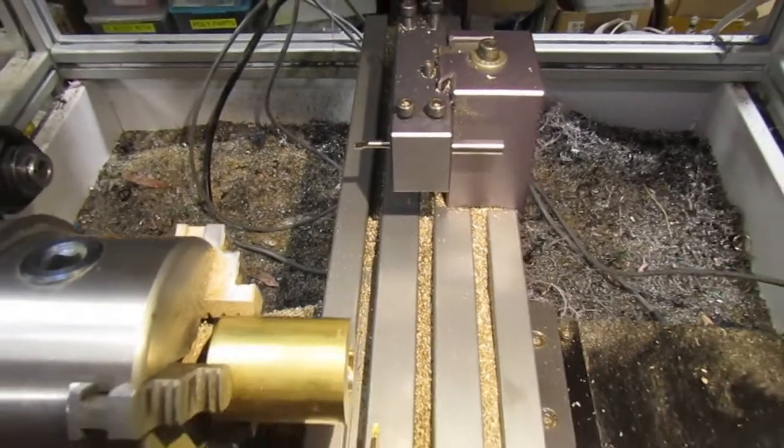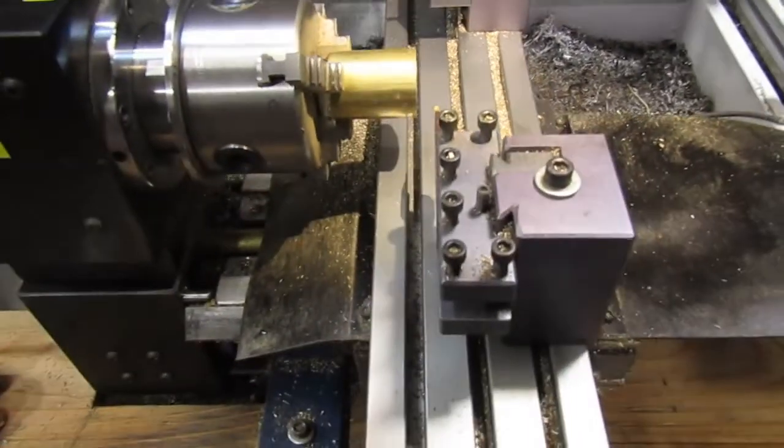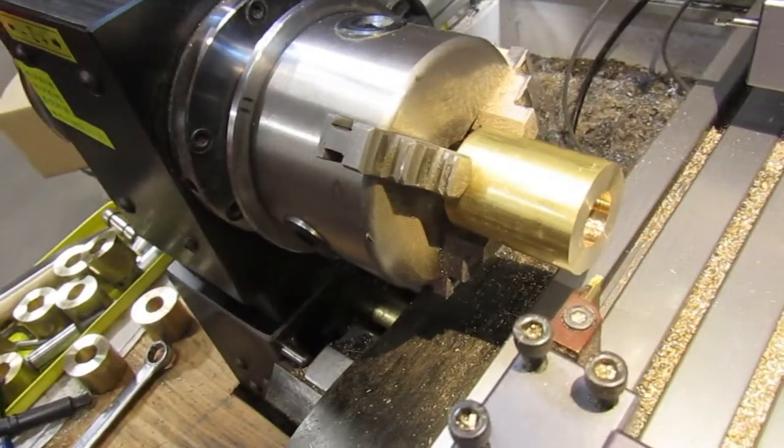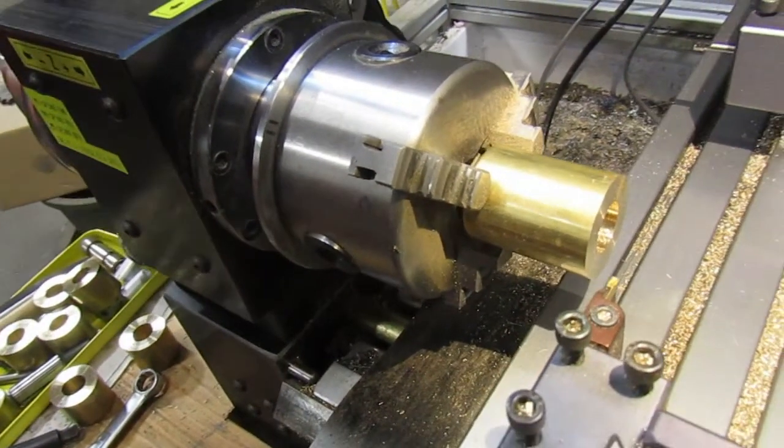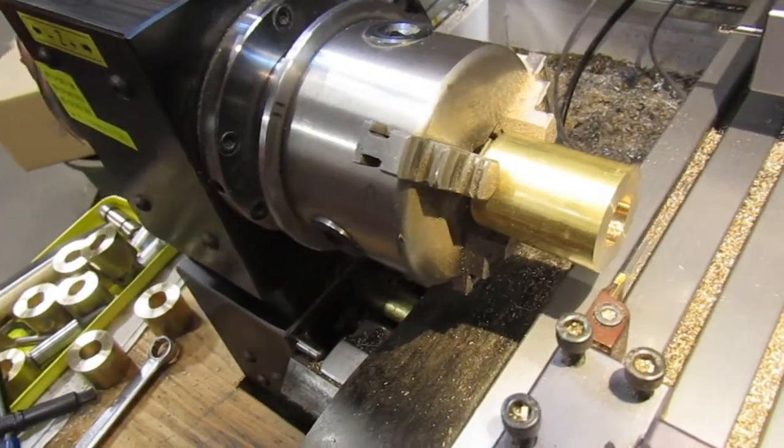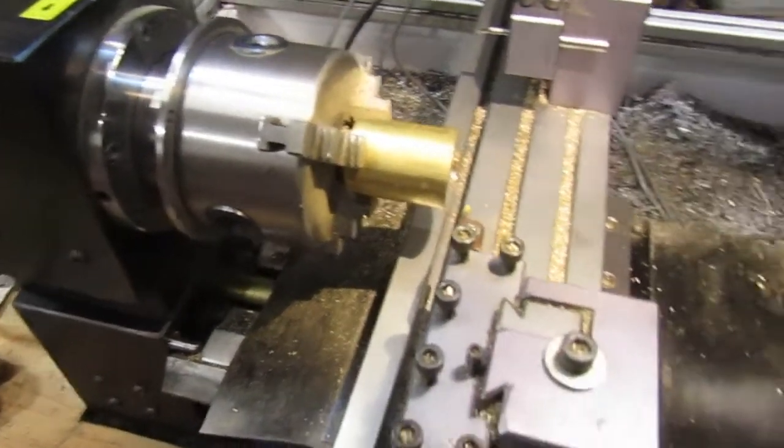We will be making the part from one and a quarter inch brass stock. We've already bored out the center of the stock to five-eighths of an inch. This was done to allow for internal turning with our mini boring bar. We have the boring bar mounted at the back of our X stage and we have a parting tool mounted to the front of the stage.